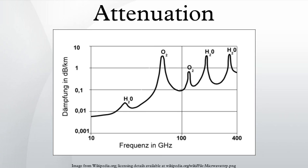Attenuation coefficients are used to quantify different media according to how strongly the transmitted ultrasound amplitude decreases as a function of frequency. The attenuation coefficient can be used to determine total attenuation in decibels in the medium using a specific formula. As this equation shows, besides the medium length and attenuation coefficient, attenuation is also linearly dependent on the frequency of the incident ultrasound beam.